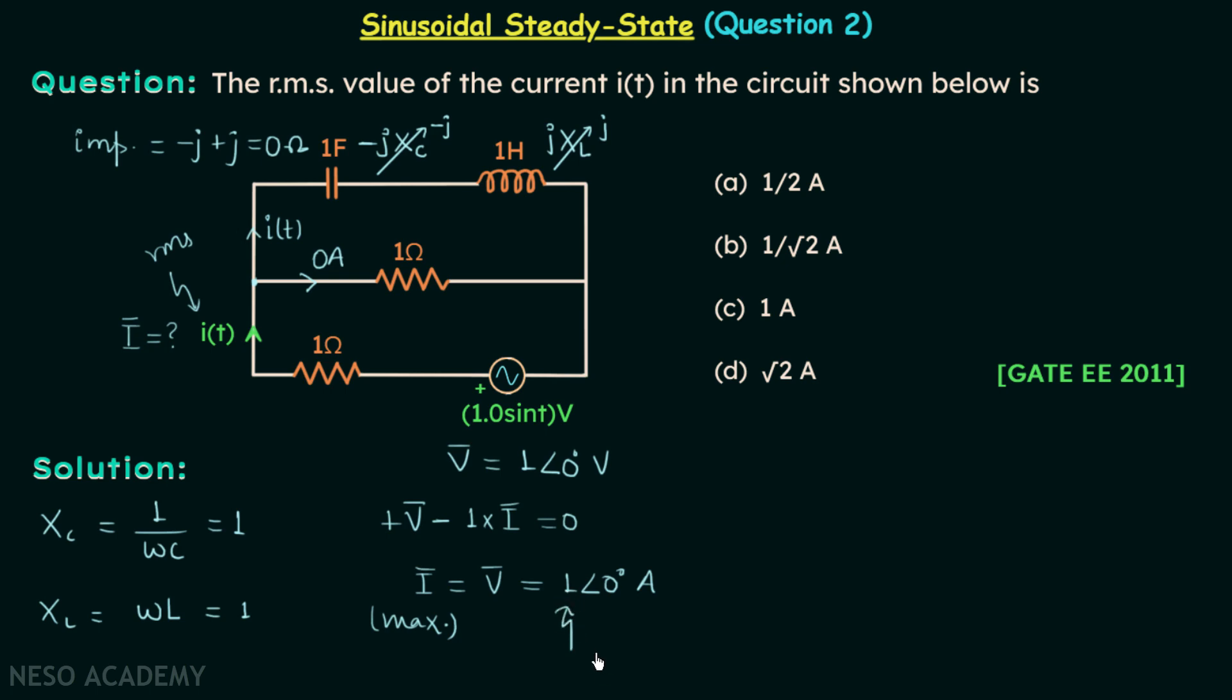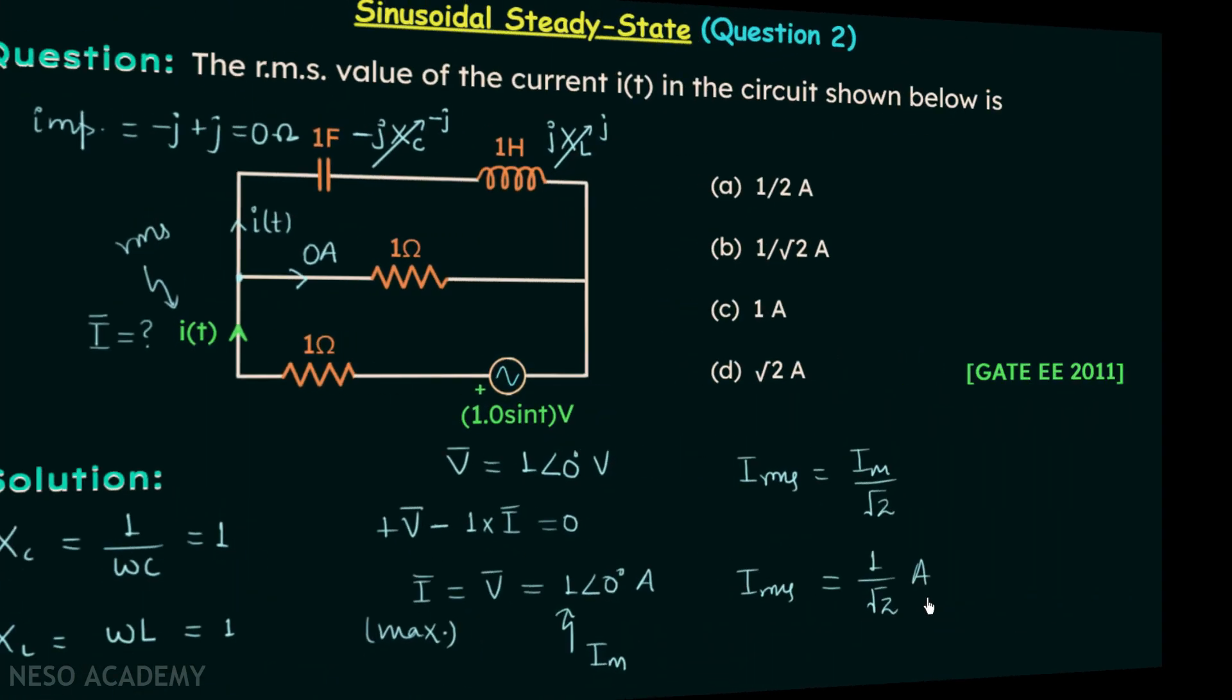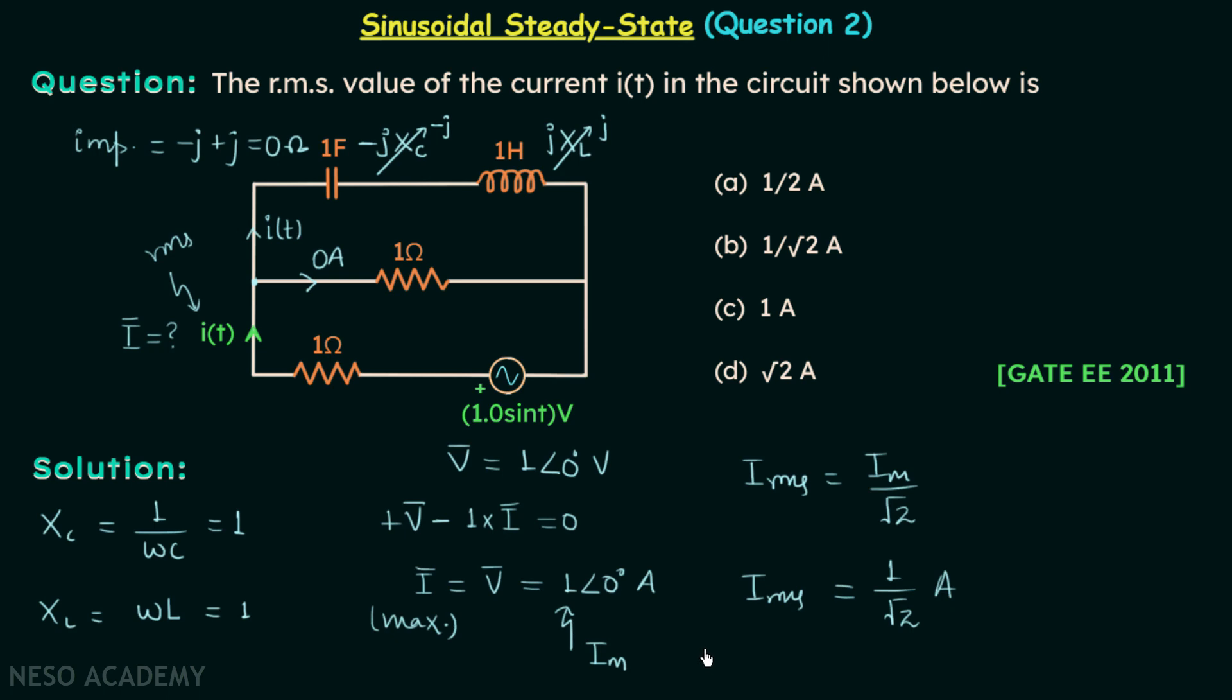This makes this 1 i maximum, and we know that the RMS value is equal to the maximum value divided by root 2. We know the maximum value, therefore we can have the RMS value very easily. So the RMS value of the current is 1 over root 2 amperes. Option B is the correct option.